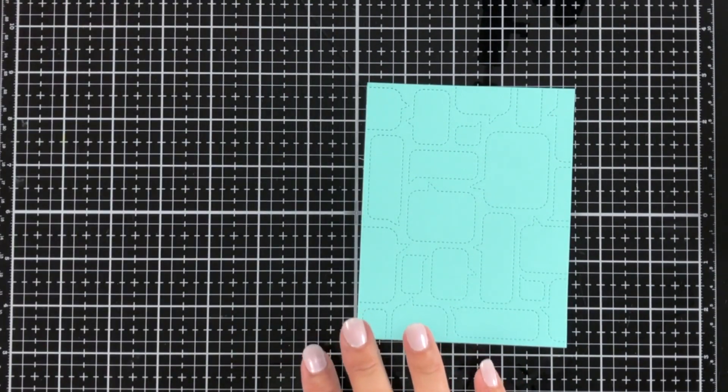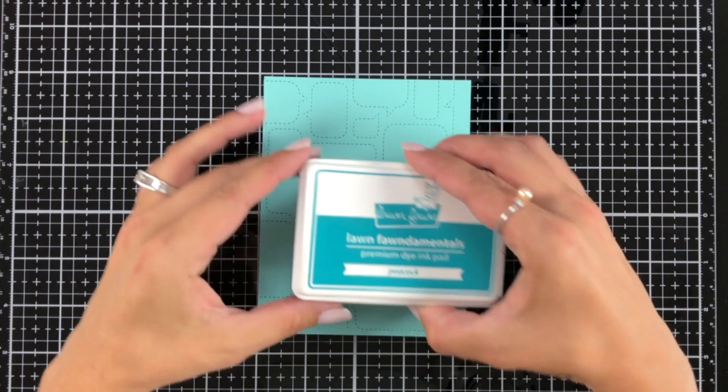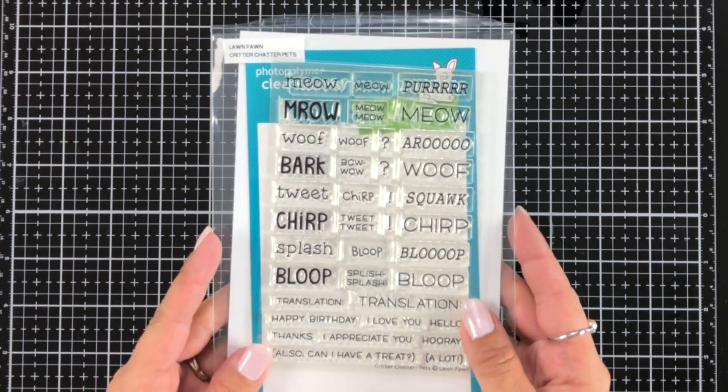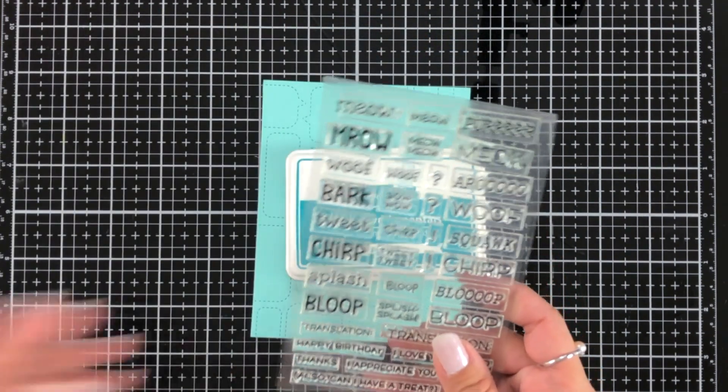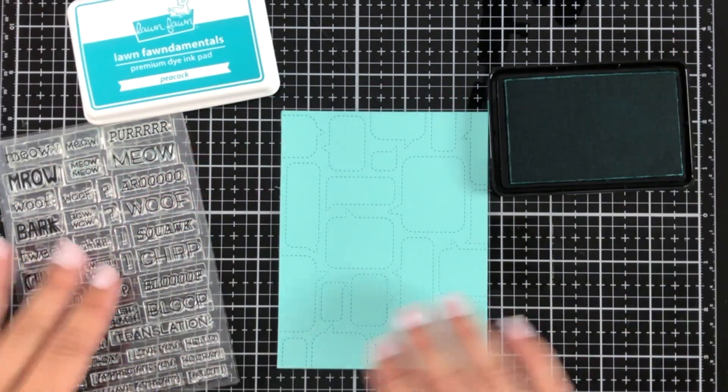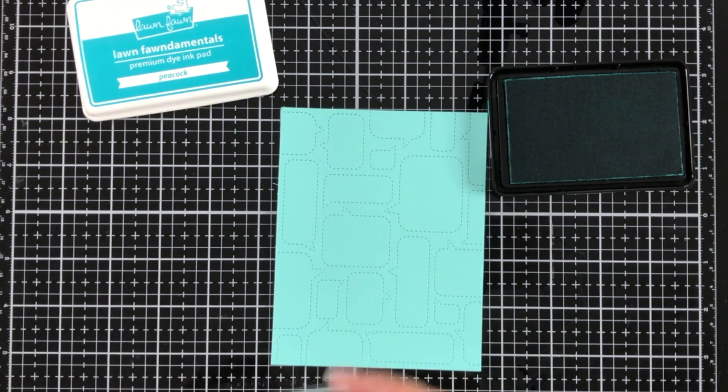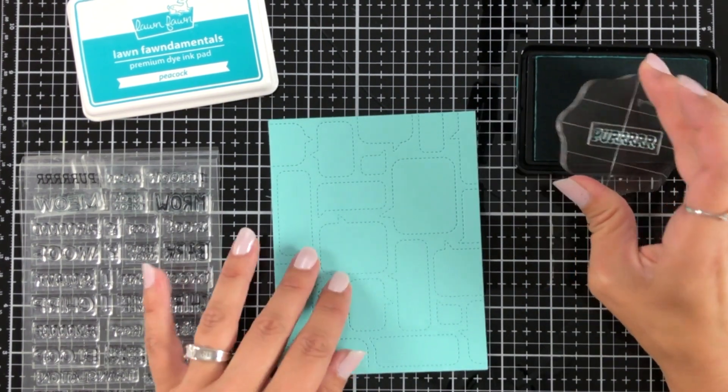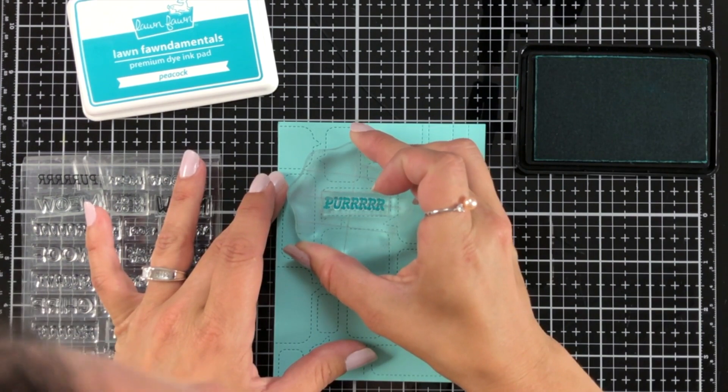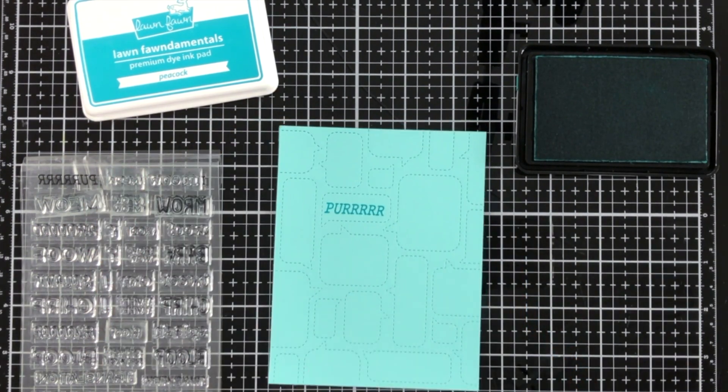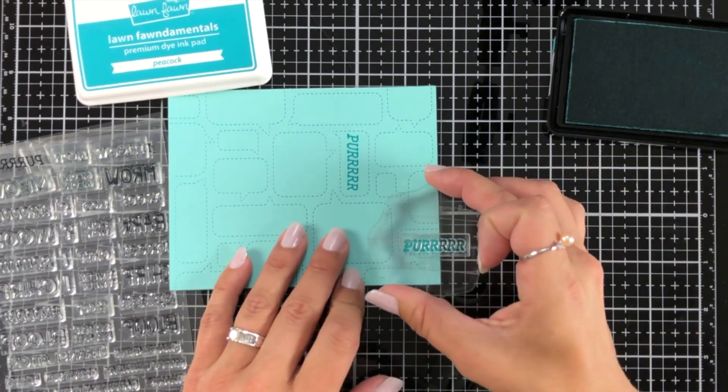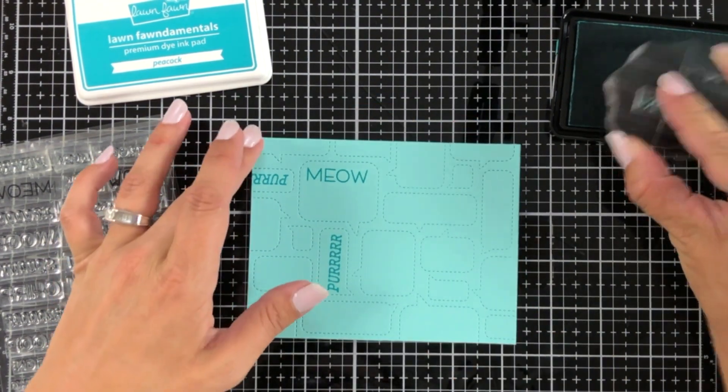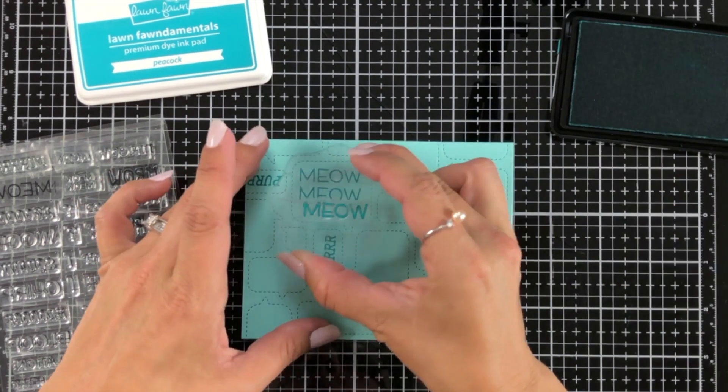Next I'm going to work on my background. I'm using mermaid cardstock and this is the stitched speech bubble backdrop. I'm going to stamp some sentiments on here. This is the Critter Chatter stamp set and I'm going to stamp these sentiments in Peacock ink. I'm just going to randomly place these in the speech bubbles. I don't need to cover the entire piece because I am going to trim this down. I'll just kind of randomly fill in those speech bubbles. There's quite a few on here for the cat so I have a lot of meows and purring.